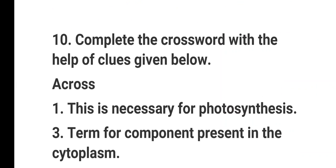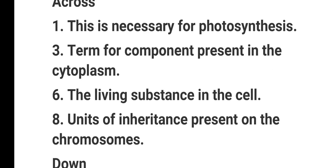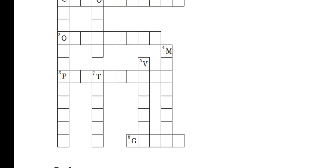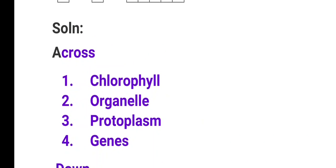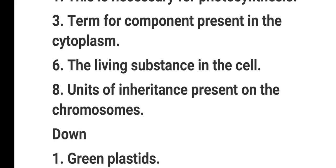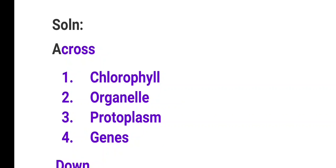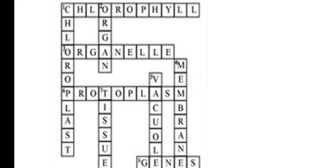Question number 10: Complete the crossword with the help of the clues given. The clues include: what is necessary for photosynthesis, a term for the component present in the cytoplasm, and green plastids. The answers include: chlorophyll, organelle, and protoplasm.